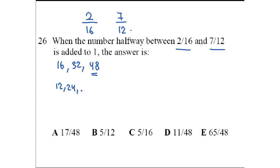12, 24, then we have 36, then we have 48. So the lowest common multiple here is 48.